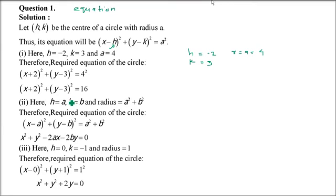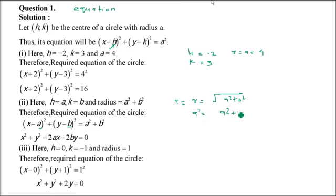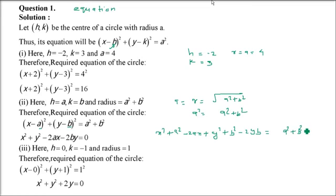The second part: center is (a, b) and radius is √(a² + b²). Using the same formula, put a in place of h, b in place of k, and since radius² = a² + b², we open it: x² + a² - 2ax + y² + b² - 2yb = a² + b². Cancel a² and b² on both sides, giving x² + y² - 2ax - 2by = 0.